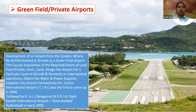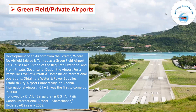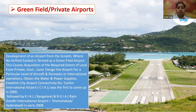The next type of airport is a Greenfield or private airport. This means developing an airport from scratch where no airfield existed before — that is termed a Greenfield airport. It involves acquisition of the required land, designing the airport for a particular level of aircraft and domestic or international operations, and obtaining all necessary power and water supplies. The Cochin International Airport was the first Greenfield airport to come up in India in 2000, followed by BIAL in Bangalore.